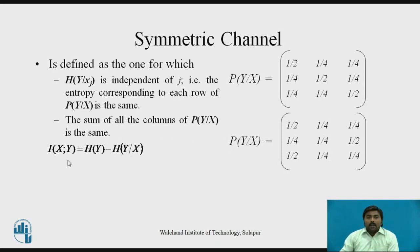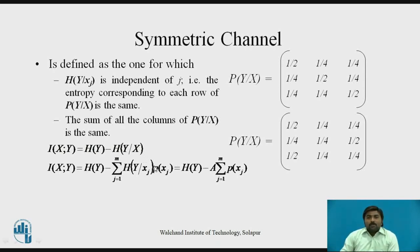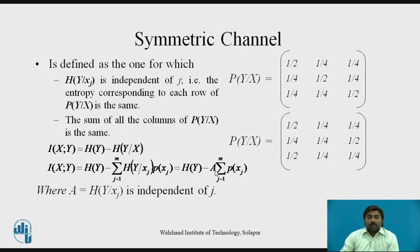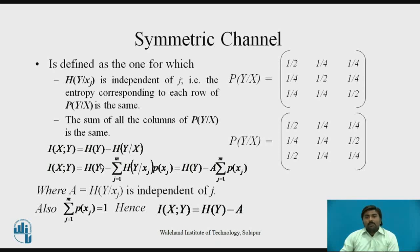For the symmetric channel, we use the mutual information equation I(x;y) = H(y) − H(y|x). The conditional entropy H(y|x), being independent of j, is written as a summation over j=1 to m of p(xj) times a constant term A. Since A is independent of j, it is taken outside the summation and the remaining summation of p(xj) over all j gives 1. Therefore, the final equation for mutual information of a symmetric channel is I(x;y) = H(y) − A.